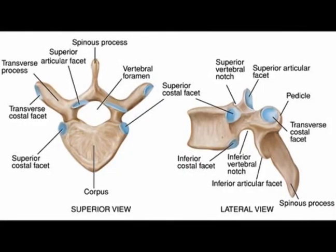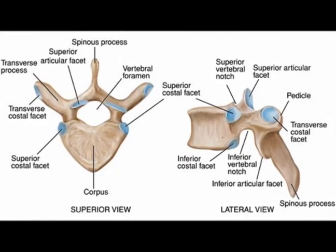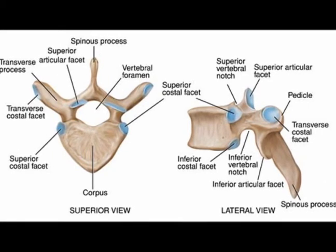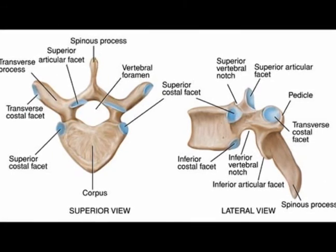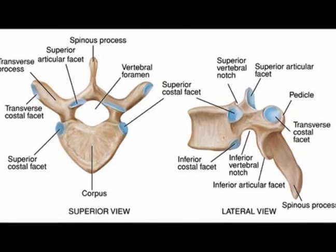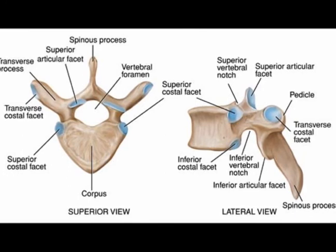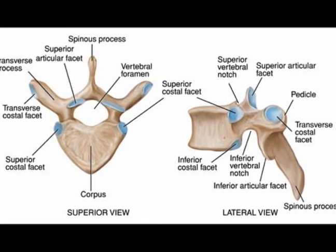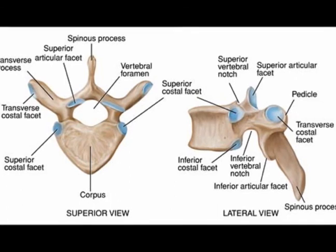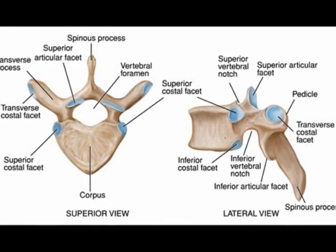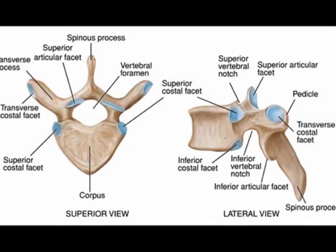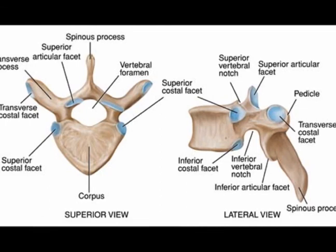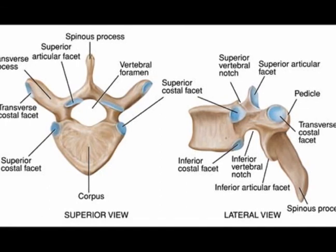The costal facet is the site of the connection between a rib and a vertebrae. The costal facets are located on the vertebrae that the rib articulates with. The superior costal facet and the inferior costal facet are located on the vertebral body, while the transverse costal facet is located on the transverse process.